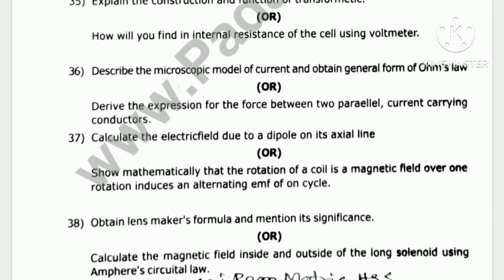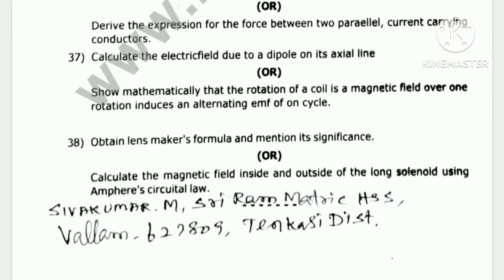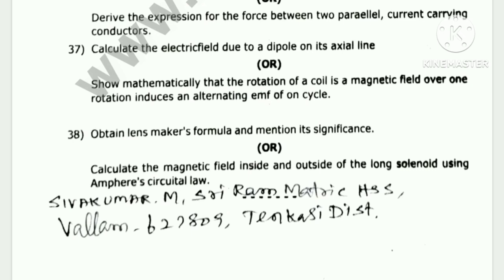Describe the microscopic model of current and obtain the general formula of Ohm's law. Questions 37 and 38: obtain the lens maker's formula and mention its significance. Calculate the magnetic field inside and outside of a long solenoid using Ampere's circuital law.